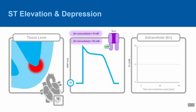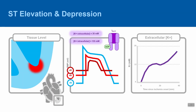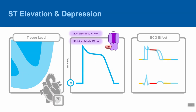During ischemia, ADP predominates, resulting in opening of the K-ATP channel. When the increased extracellular potassium rises from 4 millimole to 10 millimole, the resting membrane potential shifts to negative 60 millivolts, and importantly, the plateau phase of the myocyte action potential falls. As time progresses and the cell is deprived of more oxygen, extracellular potassium continues to rise to almost 20 millimole, resulting in an even higher resting membrane potential and an even lower plateau potential.